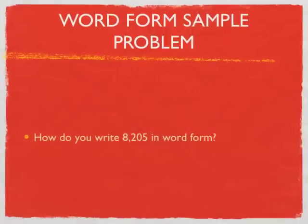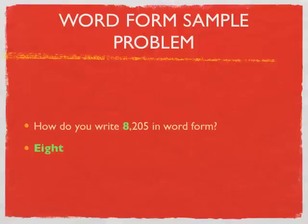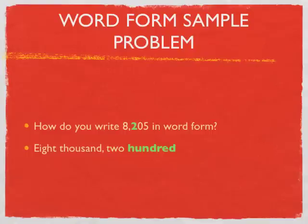Let's start with word form and do a couple of sample problems. How do you write 8,205 in word form? We're going to start with the 8 — it's word form, so we write it out. We come to the comma — every time, it's always the word thousand. Next, we've got a 2 in the hundreds spot, so we write two hundred. In the tens spot we've got a 0 — zero is worth nothing, so we don't write anything. Over in the ones spot, we find five. Just 'eight thousand, two hundred five.'